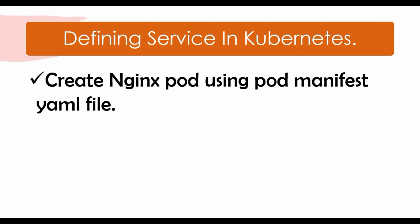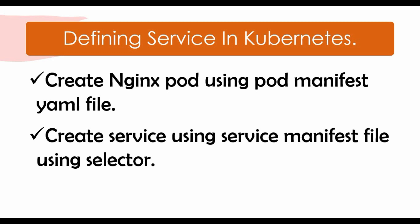We have written the whole pod manifest file - I will show you in this tutorial as a recap. After that we will make use of another file which will be used to create a service. In that service manifest file we'll be using a selector to select those pods which are created from nginx. Once the service is created we should be able to access nginx from the outside network.